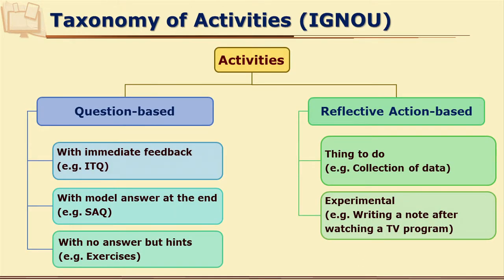How is feedback given? There can be question-based exercises with direct right or wrong answers. In electronic material, immediate feedback can be given. But in print material, you can provide a list of correct answers at the end of the unit or immediately after the questions. Sometimes there may not be one correct answer. If the question requires a long answer, then some model answers can be provided. Sometimes you even cannot give model answers — for example, whenever you ask learners to provide their own example.